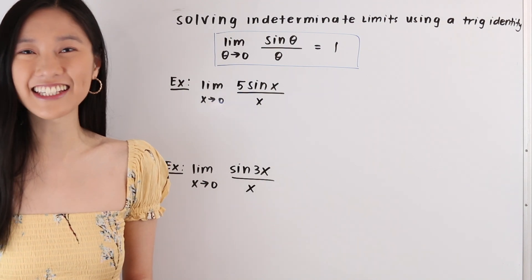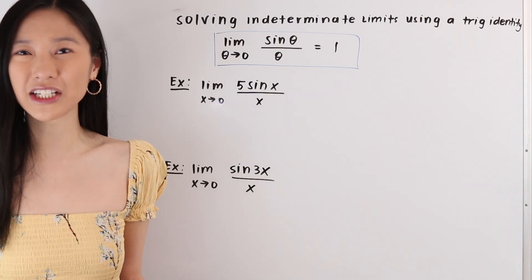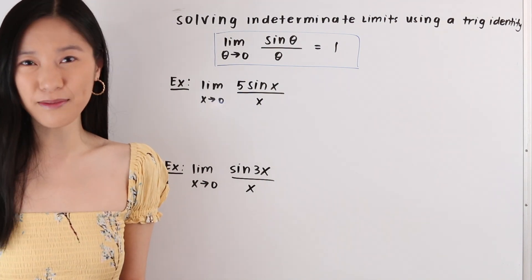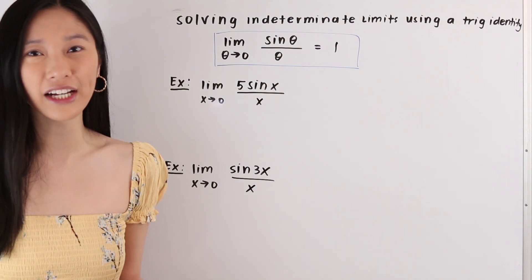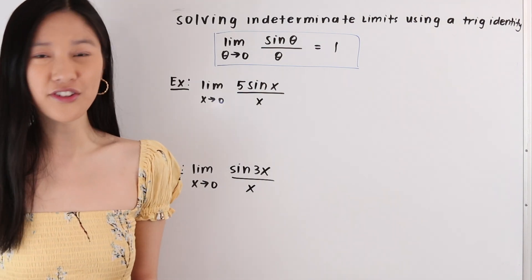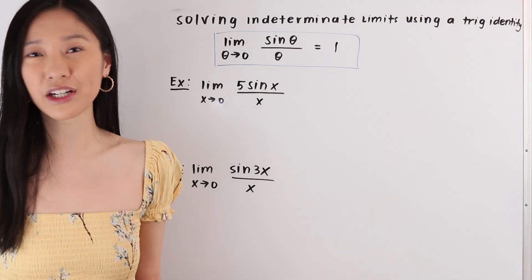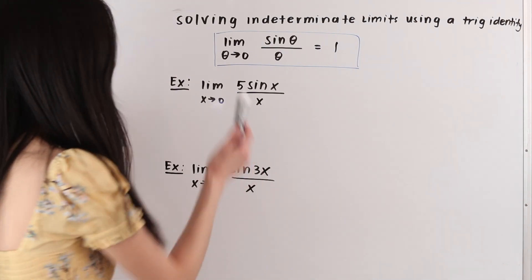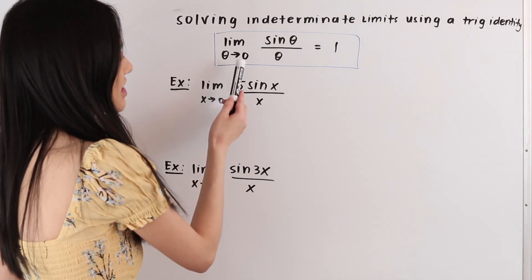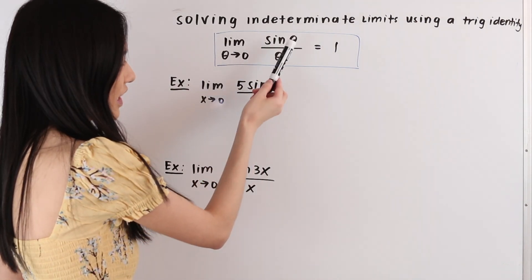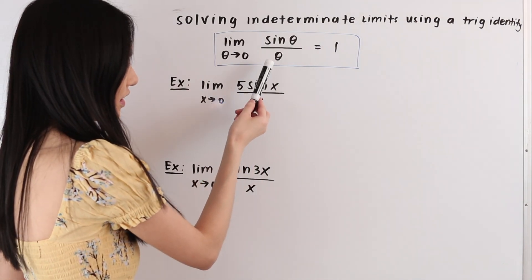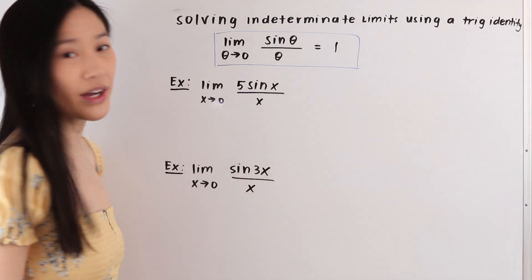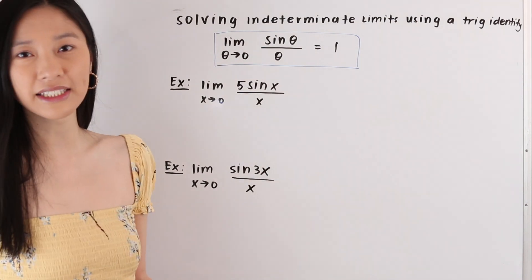Hi everyone, it's Janine here and in today's video we are going to be learning how to solve indeterminate limits using a trig identity. The trig identity that we're going to be talking about today is the limit as theta approaches zero of sine of theta over theta is equal to one. Let's go ahead and take a look at some examples.